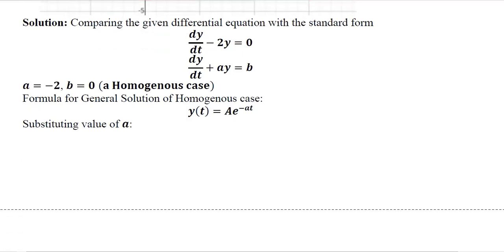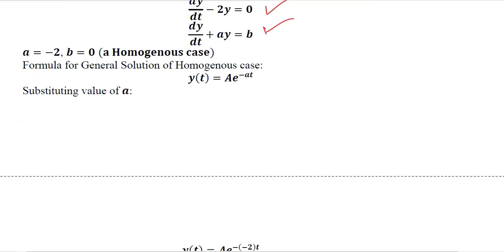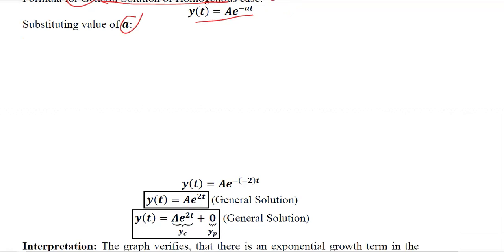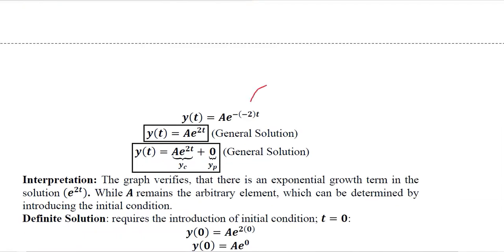Let's solve it. This is the given differential equation and this is the standard form. Here a is equal to minus 2 and b is equal to 0. A homogeneous case is here because the value of b is 0. We know the general solution formula for the homogeneous case — we have derived it already — and we substitute the value of a, which is the only unknown.